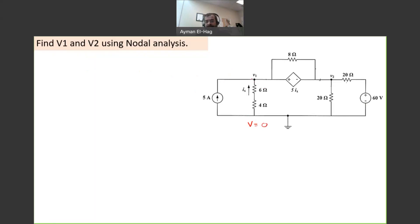Basically this is one node which is V1, this is another node V2, and we have here another node which you can call it V3. One thing we learned in the previous example: we cannot apply KCL to any node that has a voltage supply.